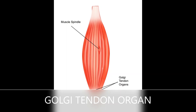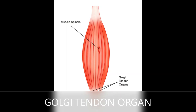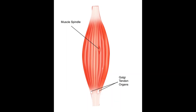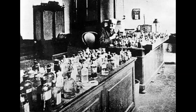The Golgi tendon is one of his important discoveries in the human body. In the year 1878, he discovered the tendinous sensory corpuscles that intimated the tension that the muscle was exerting during contraction. This, in the discoverer's honor, was named the Golgi tendon.